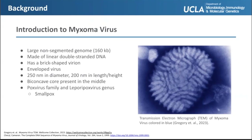Some other examples of viruses related to myxoma virus include smallpox virus, vaccinia virus, cat pox virus, and monkey pox virus.